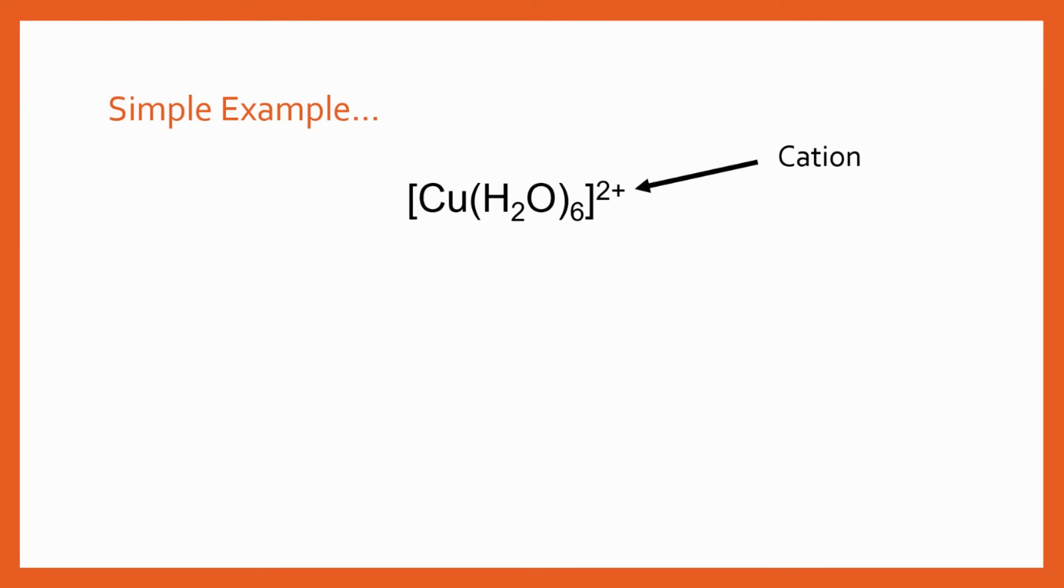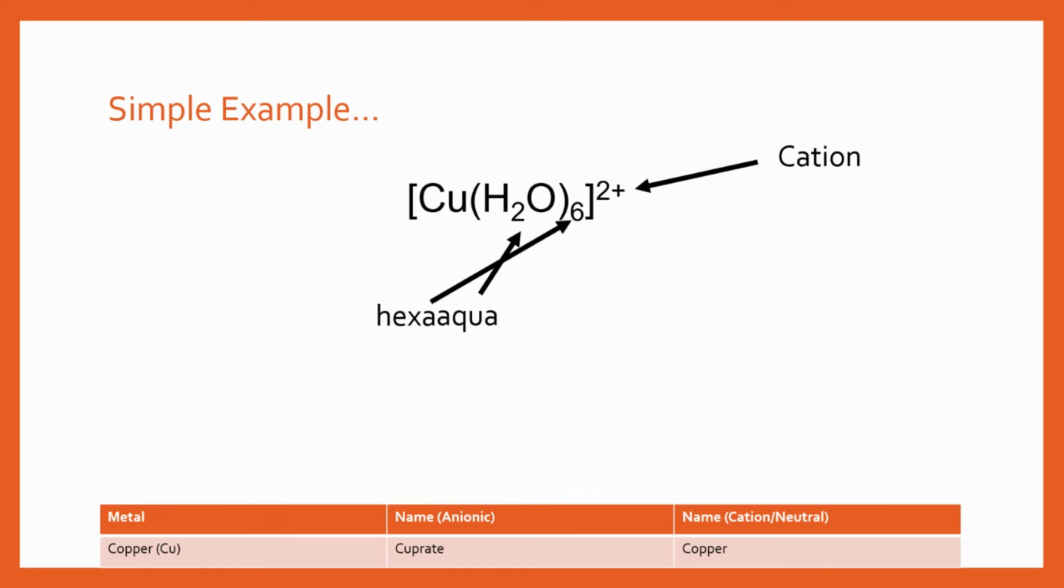So the first thing you would notice is that this is a cation so we've got a plus charge. You can remember that another name for a cat is a pussycat and cations are positive so that's one way—terrible way—of remembering that cations are positive. So we've got a positive charge there that's going to be important in a second. What we'd first realize is we've got six of those so that's going to be hexa, that's our prefix for six.